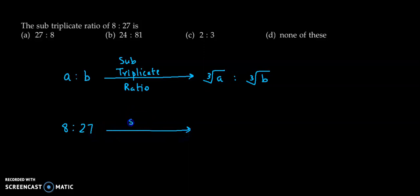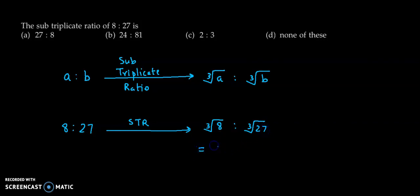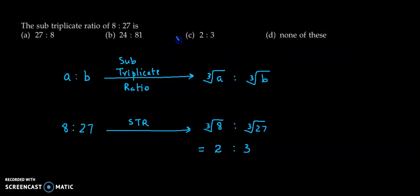Hence the sub-triplicate ratio will be cube root of 8 is to cube root of 27. Now cube root of 8 is 2 and cube root of 27 is 3. So the correct answer is option C: 2 is to 3.